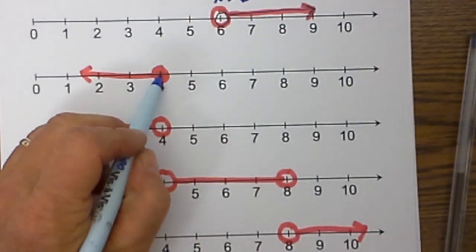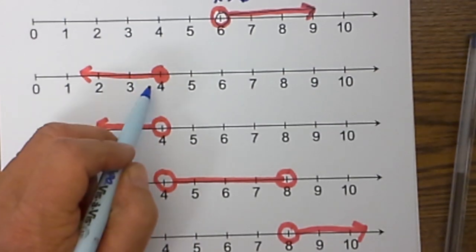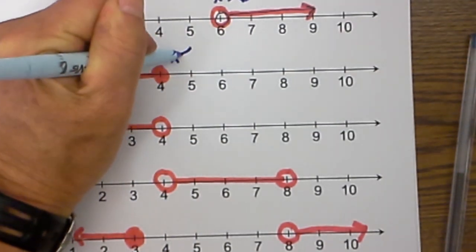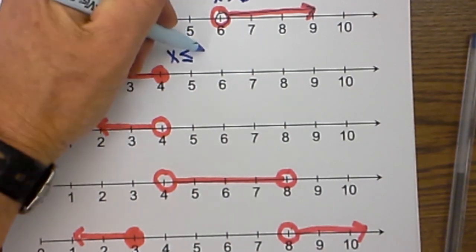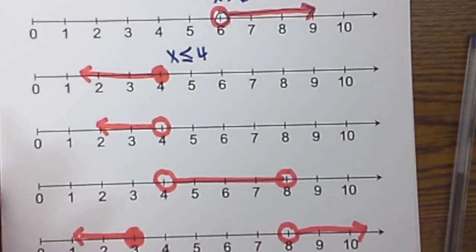This next one is closed, meaning it is less than and equal to, so x is less than and equal to 4. Notice that the x at the end is smaller than the 4.